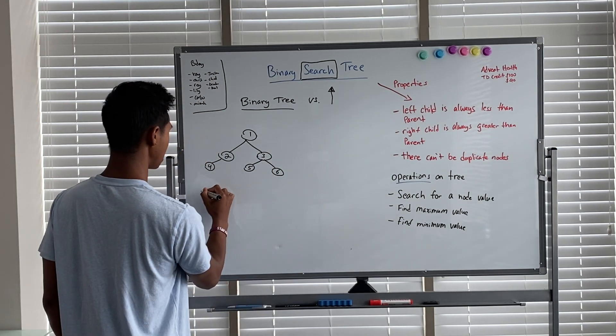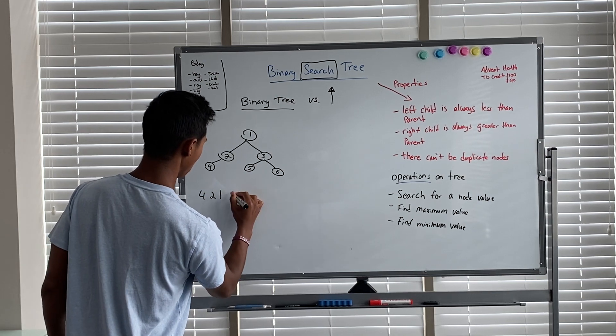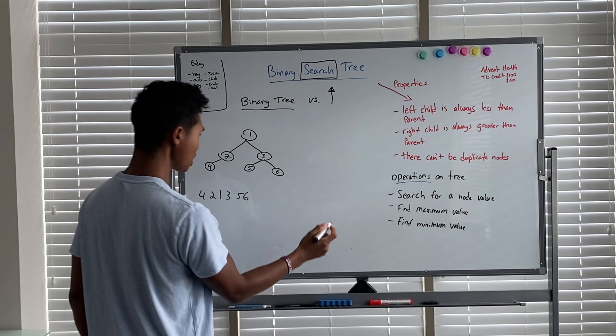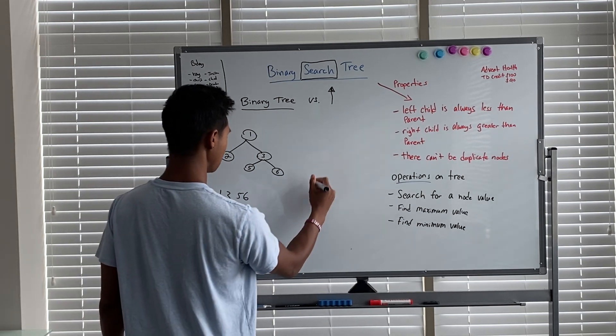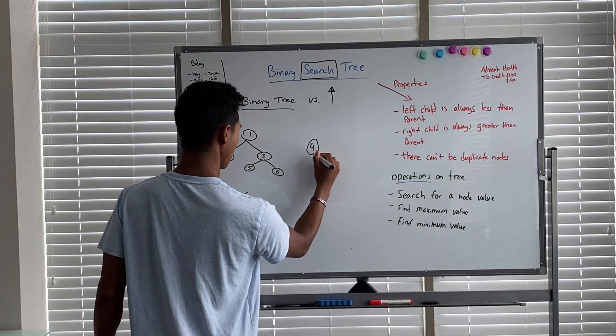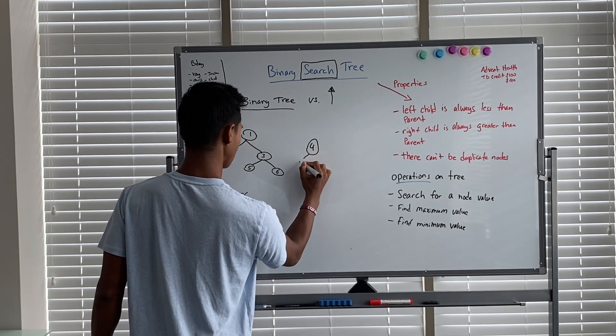matter. So we took these same numbers - four, two, one, three, five, six - and we wanted to insert them into a tree. I'm gonna do this quick. Two is less than four, so we're on